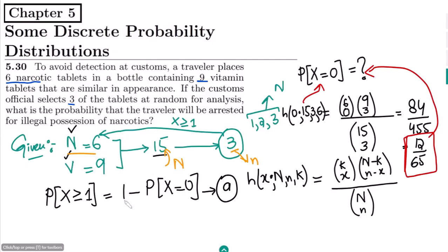But initially we have also seen that this should be subtracted from 1 as well. So it would be 12 divided by 65, which is for this value. So it would be 65 minus 12 divided by 65, which is 53 divided by 65.